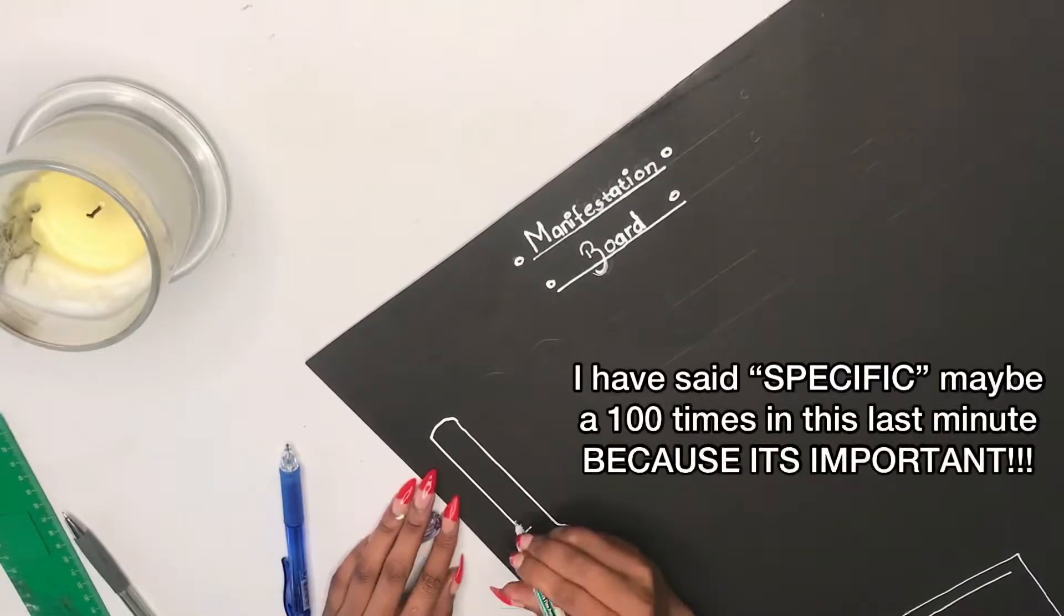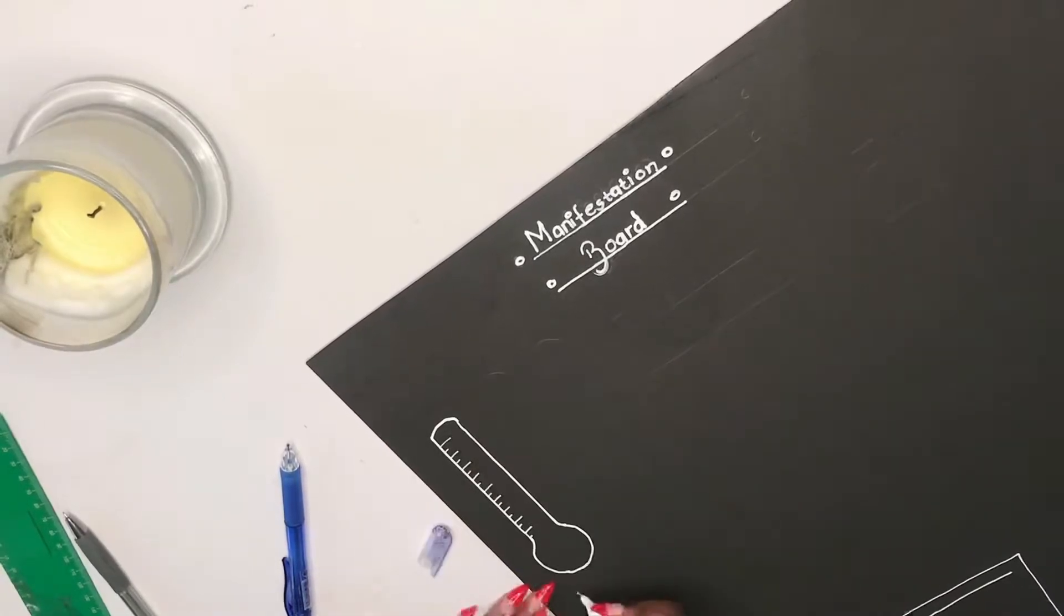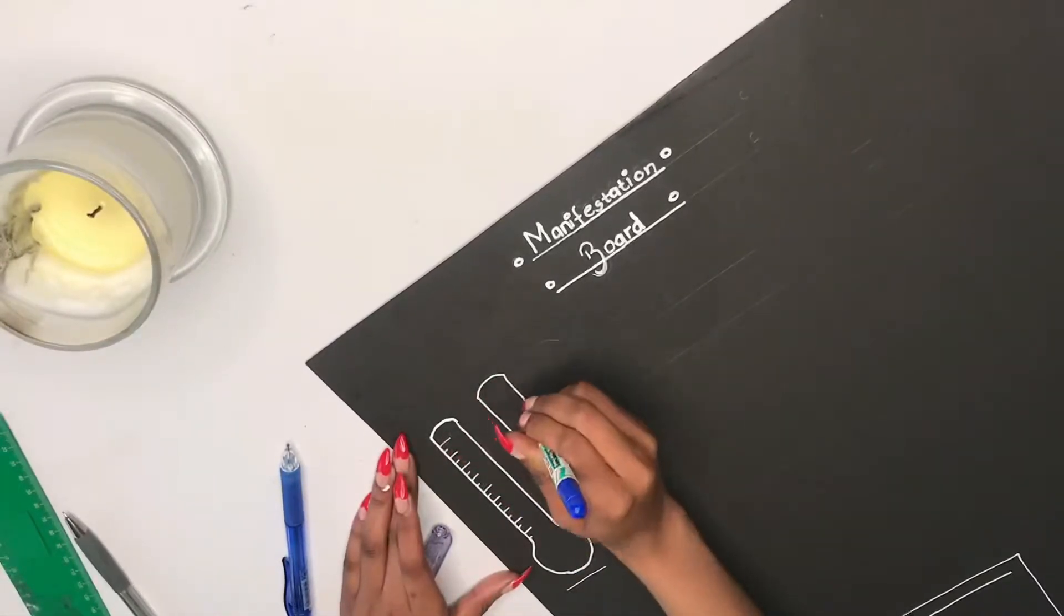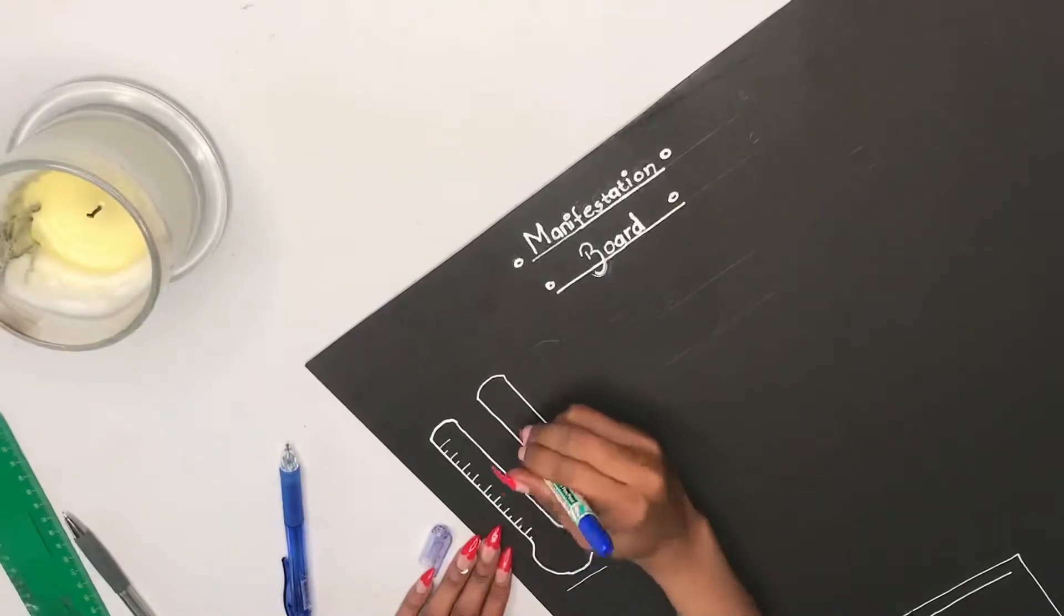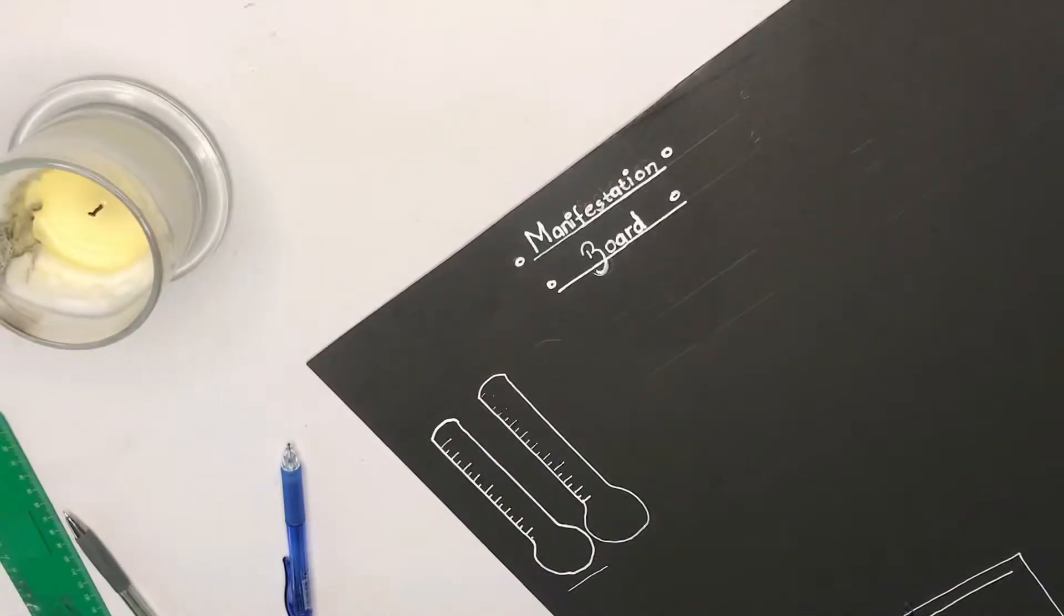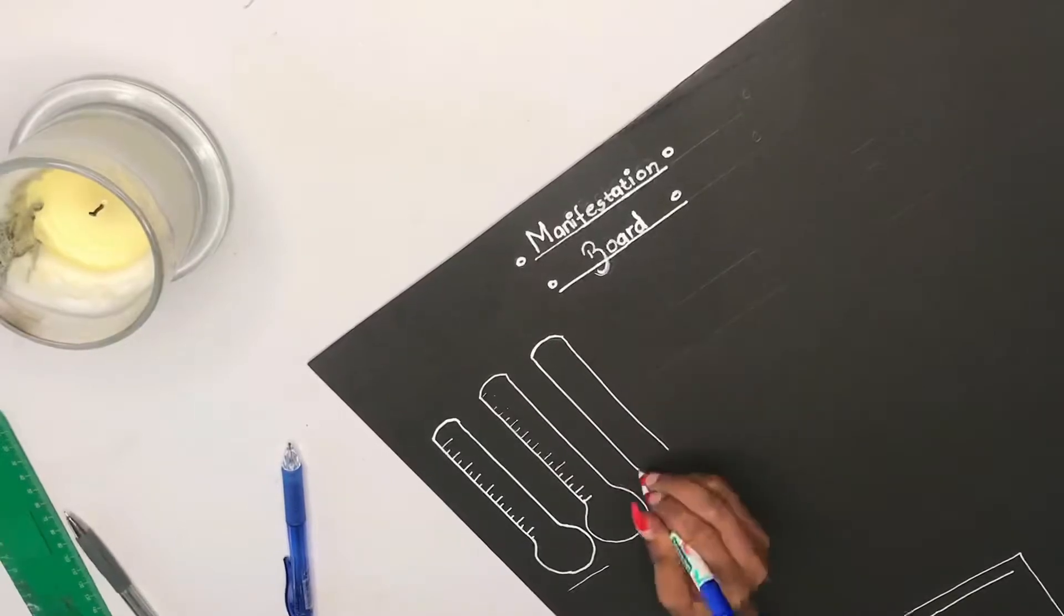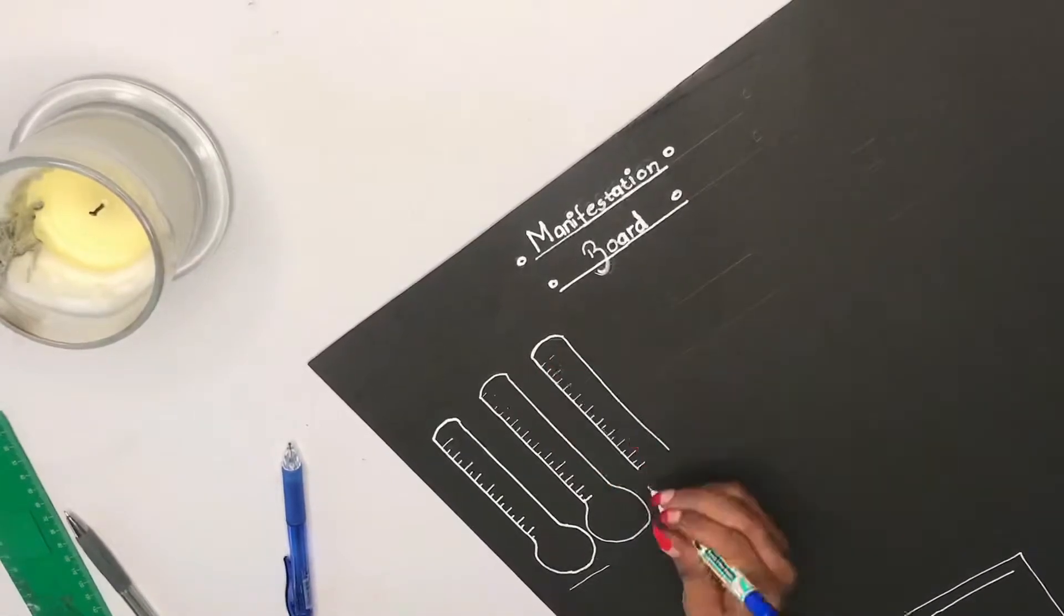So as you saw in the beginning, I just used a pencil to kind of design and plan out my manifestation board, and then I just traced over it with Tipex.